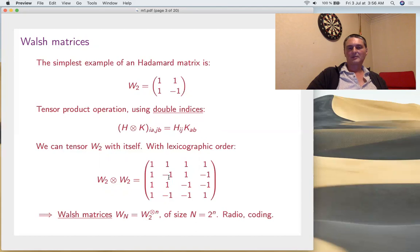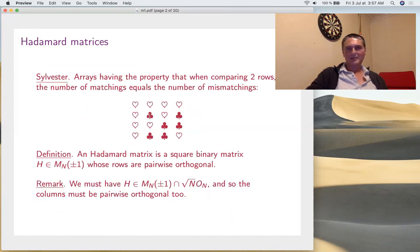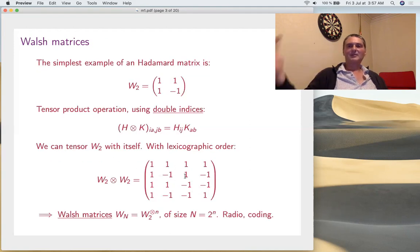Starting from this matrix here, we can construct more by tensoring W2 with itself. The idea is to convert this double indexing into lexicographic order using usual indices one, two, three, four. This means to put four blocks like this, following the pattern, each block being W2, but following the pattern of W2 itself - W2, W2, W2, and minus W2. That's exactly this matrix written in plus minus one form. You can do it on and on. These Walsh matrices of sizes two to the N were used in radio coding - the main application of Hadamard matrices is coding.